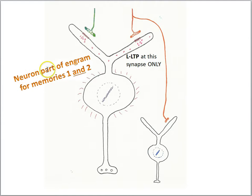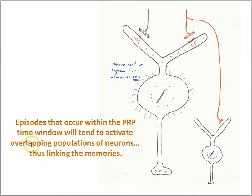So this same neuron then becomes part of the engram for memories one and two. The story is that episodes occurring within the plasticity-related product time window will tend to activate overlapping populations of neurons, thus linking the memories.